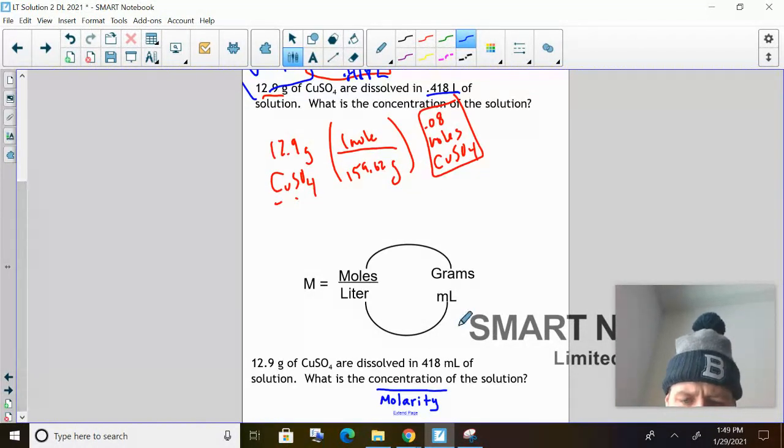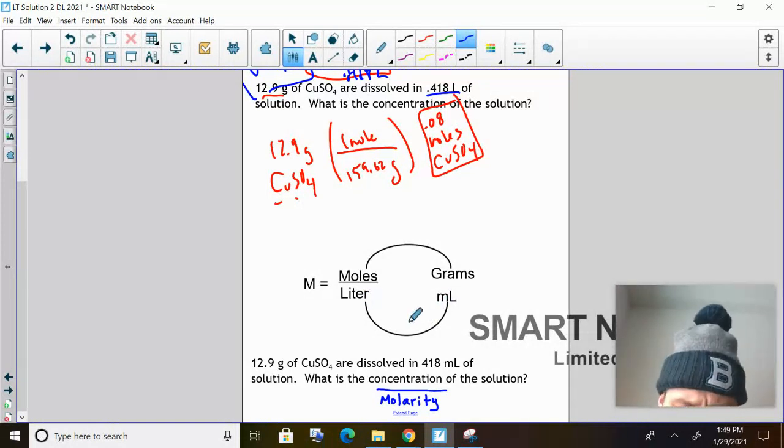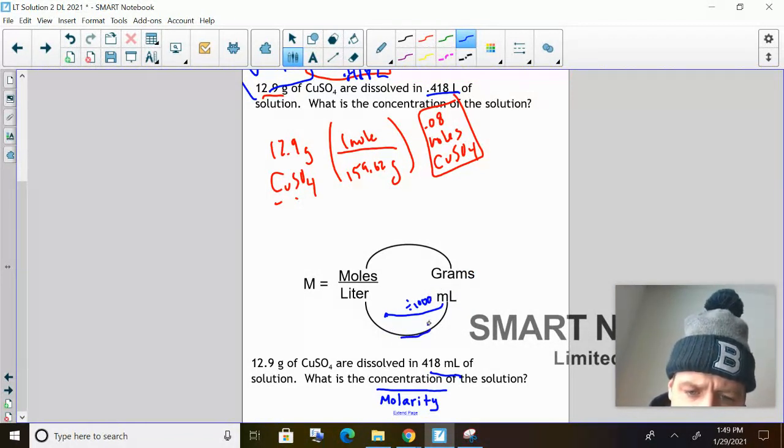So we can also go from milliliters to liters. And how you do that is if I'm going from milliliters to liters, I divide by 1,000. So in this instance, you have the same problem, but it's in milliliters. Well, if I'm in milliliters, I just divide by 1,000. If I'm going from liters to milliliters, I multiply by 1,000. So this just would be 0.418 liters then. So I just can turn that quickly.